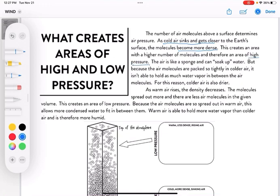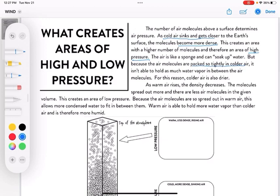The air is like a sponge and can soak up water. But because air molecules are packed so tightly in colder air, it isn't able to hold as much water vapor in between the air molecules. For this reason, colder air is also drier.